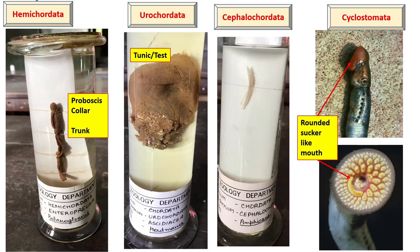Urochordata. Urochordates are marine animals. The body is covered by a test or tunic. The notochord is usually present only in the larval stage and is restricted to the tail region; that's why these are called Urochordata — 'uro' meaning tail. Retrograde metamorphosis is usually seen. Examples include Ascidia, Doliolum, and Salpa.